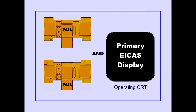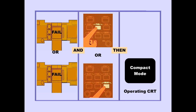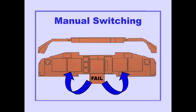If the upper or lower CRT fails, the primary ICAST display appears on the operating CRT. If the upper or lower CRT fails and the secondary engine display switch is pushed or an engine exceedance occurs, then the compacted CRT mode of the primary and secondary ICAST displays is displayed on the operating CRT — all data from the two displays is available, but presented in a less detailed format. This compacted mode is also displayed if the fuel synoptic switch or gear synoptic switch is pushed. Manual switching of ICAST displays is available and is discussed in the Flight Instruments module.